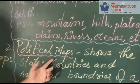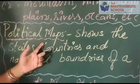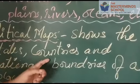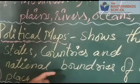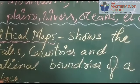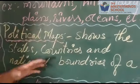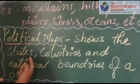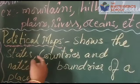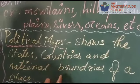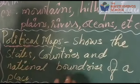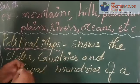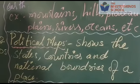The second one is the political map. It shows the states, countries, and national boundaries of a place. So from this map we can see how many states there are, how many countries, and where our national boundaries meet each other.